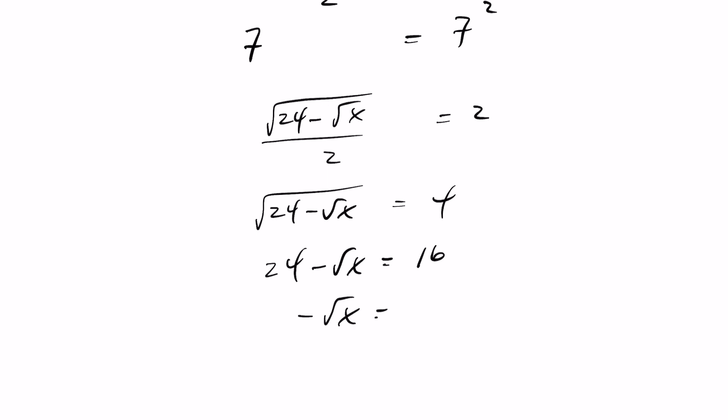You get negative root of x equals negative 8. That is, the root of x equals 8. Square both sides, and you end up getting x equals 64.